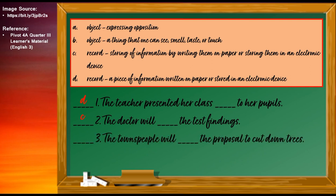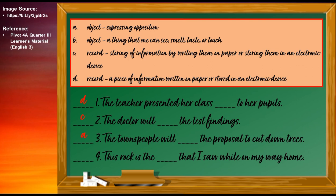Number three: The townspeople will blank the proposal to cut down trees. The correct answer is LETTER A: The townspeople will object the proposal to cut down trees. The word OBJECT means expressing opposition. Number four: This rock is the blank that I saw while on my way home. The correct answer is LETTER B: This rock is the object that I saw while on my way home. The word OBJECT means a thing that one can see, smell, taste, or touch.